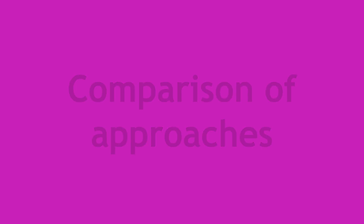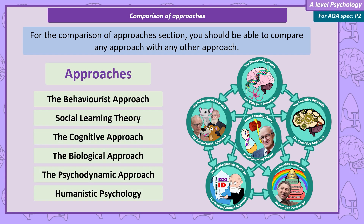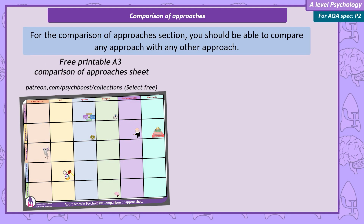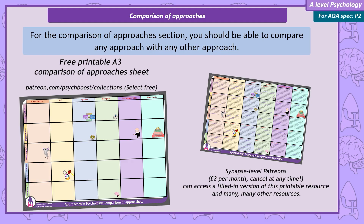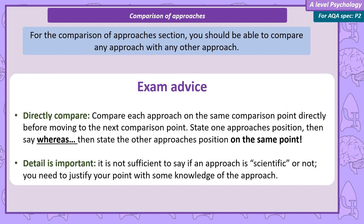Comparison of approaches. By the end of this video you should be able to directly compare any approach you've studied in this unit with any other approach. The topics we're going to use to compare each approach are: the methodology used, three topics from the issues and debates unit, and how the approach has been applied to psychological treatments. I've made a sheet you can use to note down each comparison — print it out and fill it in as we go.